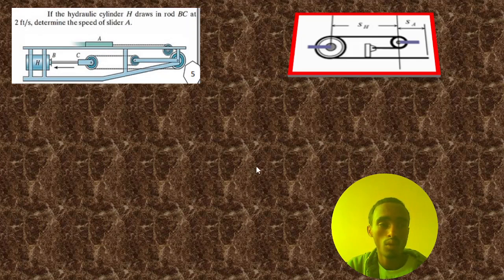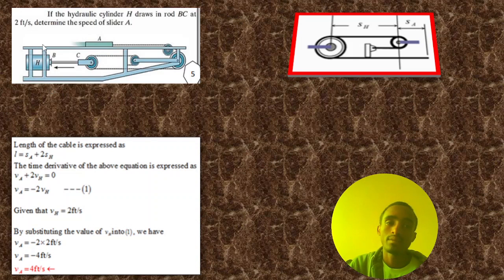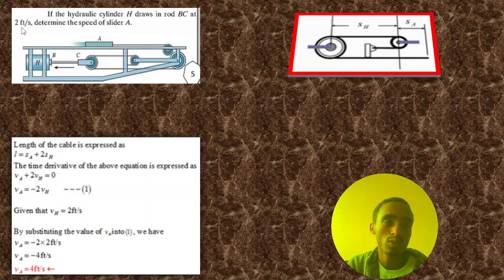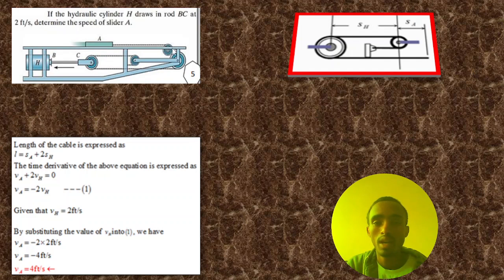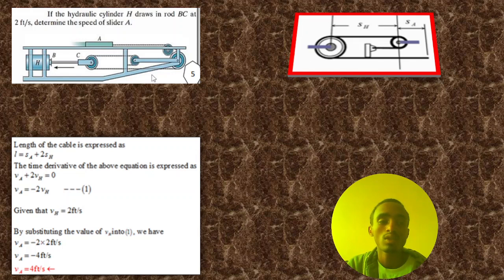We are given the speed of the rod BC, which is the hydraulic cylinder H, which is two feet per second. Then the total length is given. Here, as you can see, this is a free-body diagram. From here to here we have sh, and also we have another sh, so total we have 2sh. And from here to here we have sa. So the total length is equal to sa plus 2sh.